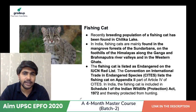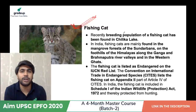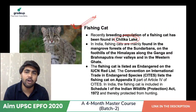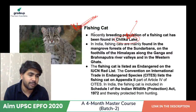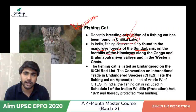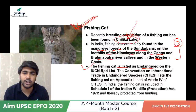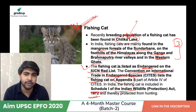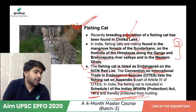The Fishing Cat has been found in the Chilka Lake region. Generally, it is found in the mangrove forests of Sundarbans, in the Brahmaputra Valley, the Himalayan foothills along the Ganga, and in the Western Ghats. The fishing cat is listed as Endangered on the IUCN Red List, placed in Appendix 2 of CITES, and included in Schedule 1 of the Indian Wildlife Protection Act 1972, thereby protecting it from hunting.